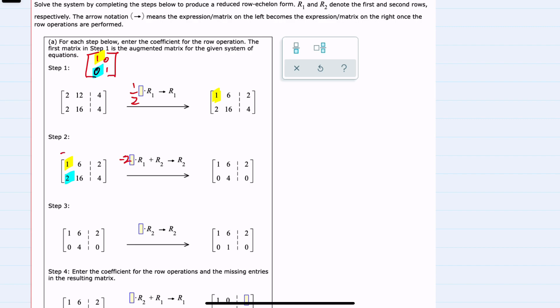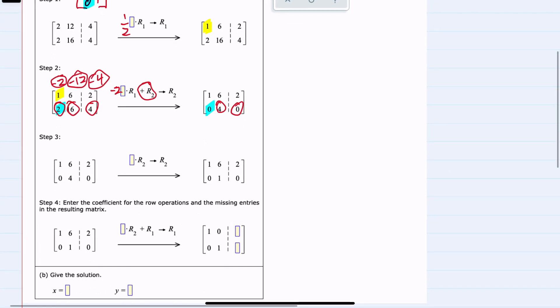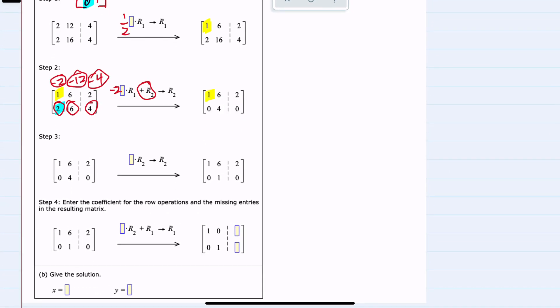That would give me negative two times one is negative two, negative two times six is negative twelve, and negative two times two is negative four. Then we're adding that to the second row. So we're adding negative two and two to get zero. Again, that was my goal for this operation all along. And in doing so, I will also add negative twelve and sixteen to get four. Negative four and four are added to be zero. So two steps in here, and we now have that first one that we wanted and the zero. So far, so good.